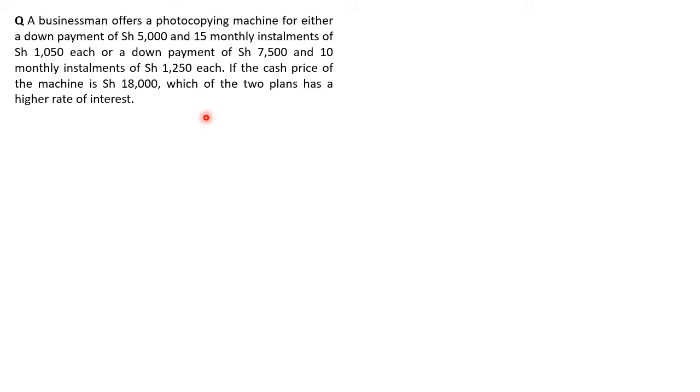I need to explain that this businessman is offering the machine using two plans. Either a buyer can pay $5,000 and 15 monthly installments of $1,050 each, or a buyer can choose $7,500 and 10 monthly installments. The cash price is $18,000. So as we progress to get the rate of interest that is higher than the other, we need to do the following.